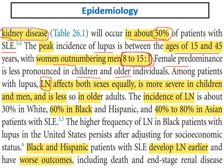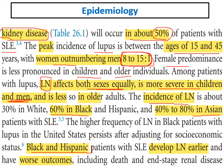Regarding lupus nephritis specifically: it affects both sexes equally, and lupus nephritis is usually more severe in children and men. The incidence of lupus nephritis varies according to race and ethnicity — it is highest in Black and Asian populations. Black and Hispanic patients usually develop lupus nephritis earlier and more severely, with worse outcomes.